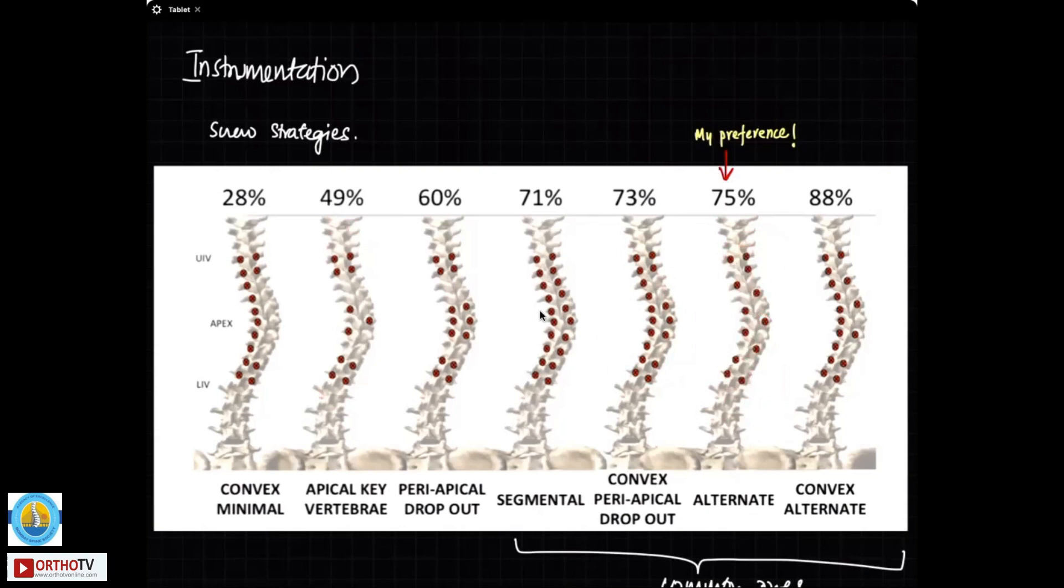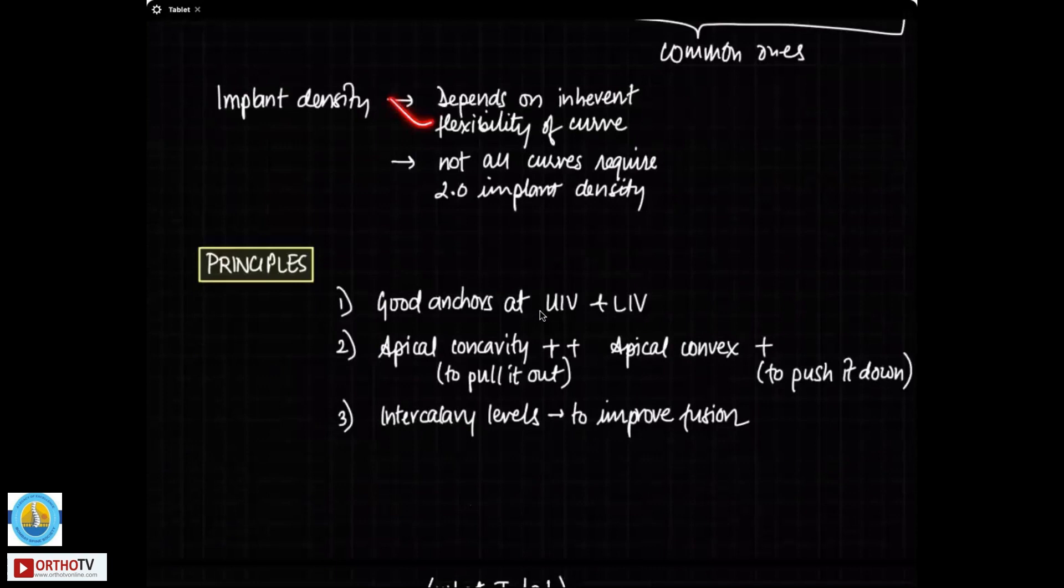There's no particular good answer for this that what you should do. I feel that you have to individualize this. Somebody who is quite rigid and you want more correction might require many more screws. And somebody who is quite flexible can do with a lesser implant density as well and can do quite well. Implant density depends on the inherent flexibility of the curve and definitely it's not required to go to full implant density of 2.0 for every patient.